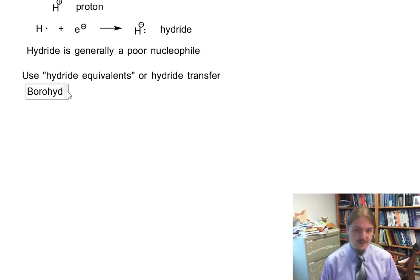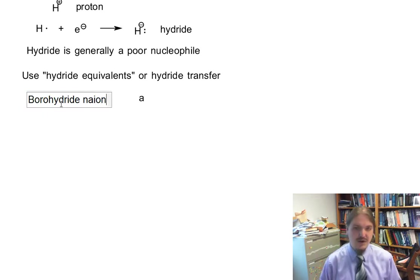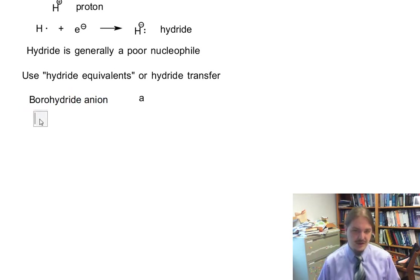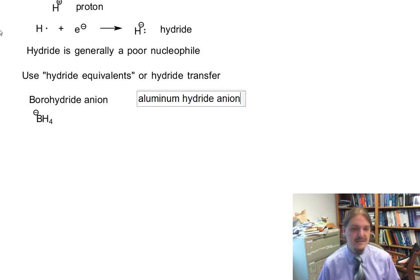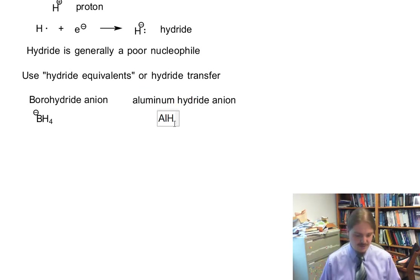And so there are multiples of these, but we're only going to talk about two. And they have very similar structures. The borohydride anion, which has the formula BH4 minus, and the aluminum hydride anion, which has the symbol AlH4 minus. And again, it's an anion.